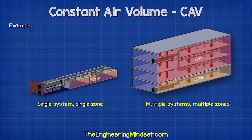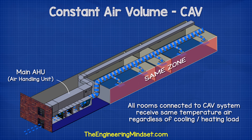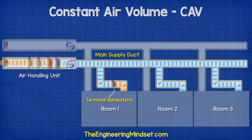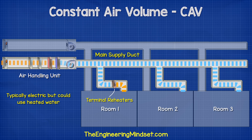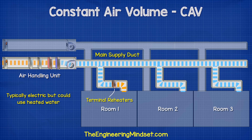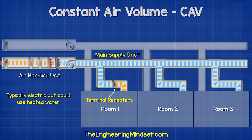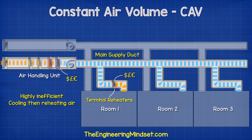Sometimes we have multiple CAV systems within a building, which gives us some zone control, with each CAV system providing a different temperature air to suit its individual zone. A possible solution to individual room control is to install terminal reheaters, usually found just before the diffuser in the ceiling. These are typically electrically powered heaters, although they could also be from a hot water system. These units will heat the local incoming air up to a higher temperature to suit the individual room. But this is very energy inefficient because you're already cooling the air down in the main AHU at significant cost, and then also paying to heat the air back up again — wasting energy and money on both cooling and heating.